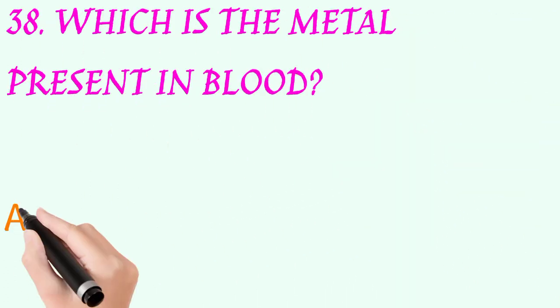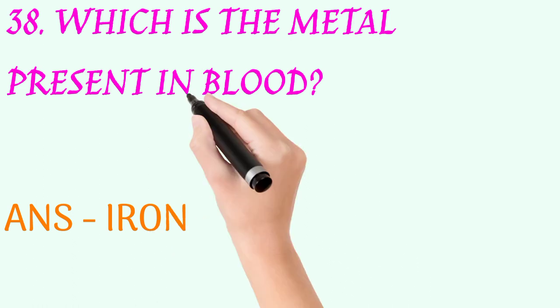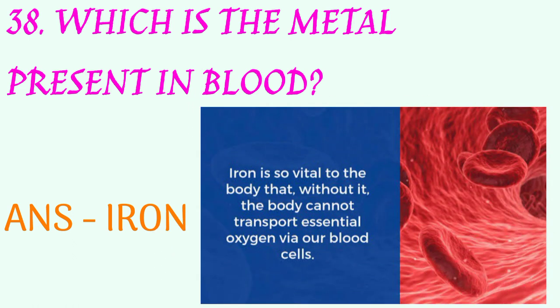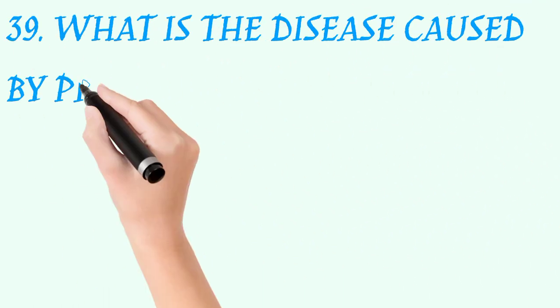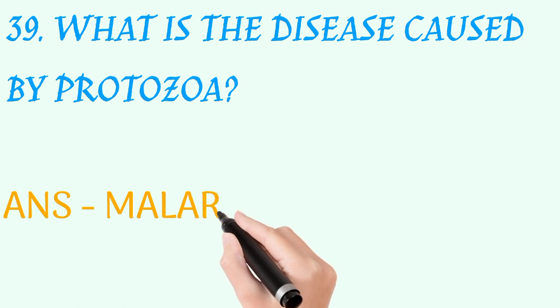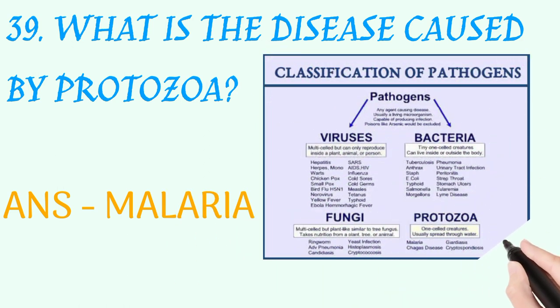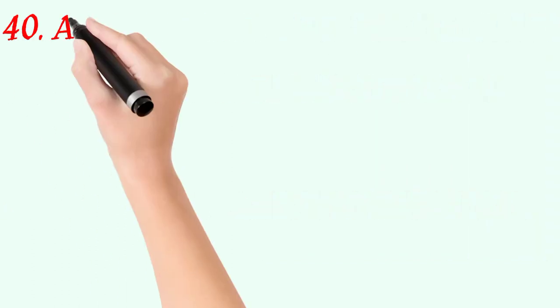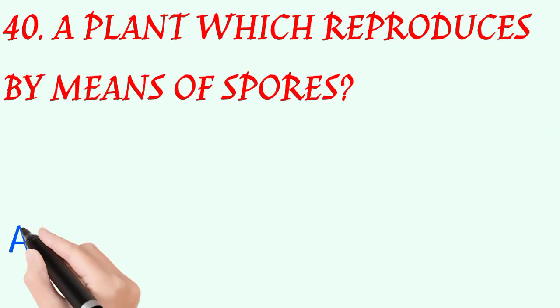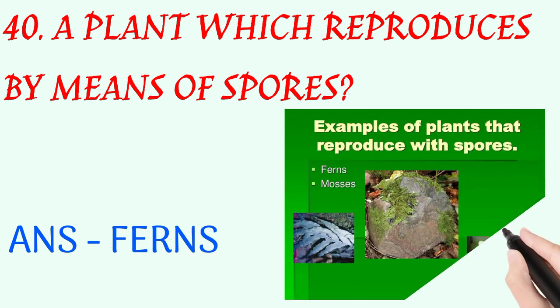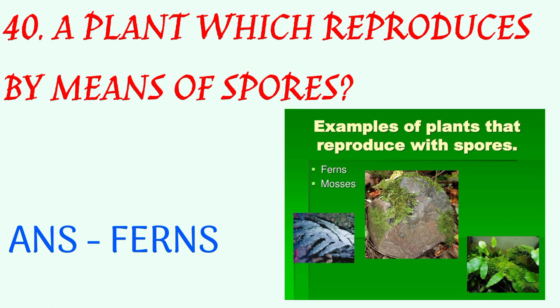Which is the metal present in blood? Answer: iron. What is the disease caused by protozoa? Answer: malaria. A plant which reproduces by means of spores? Answer: ferns.